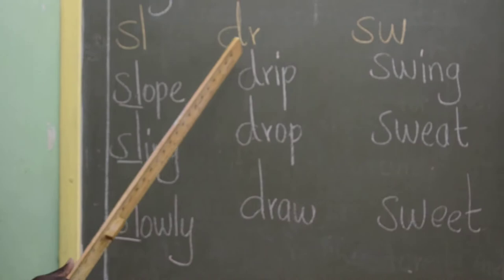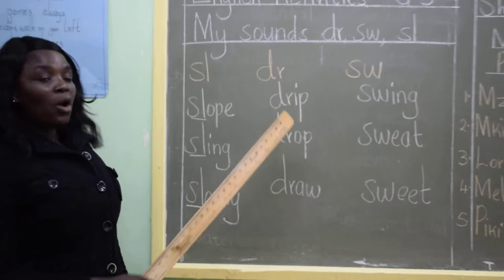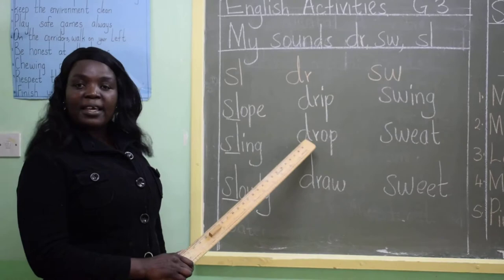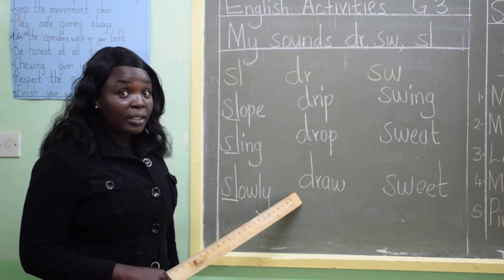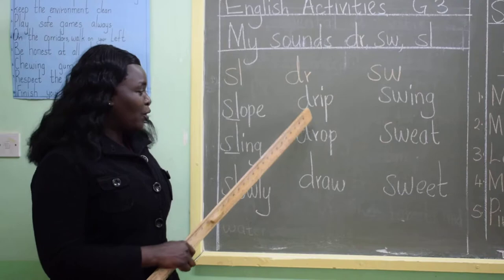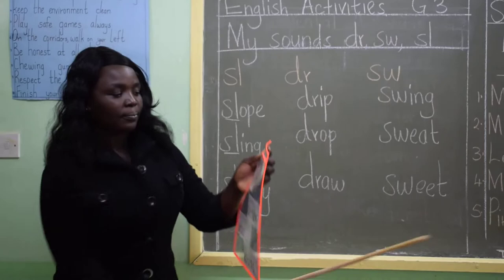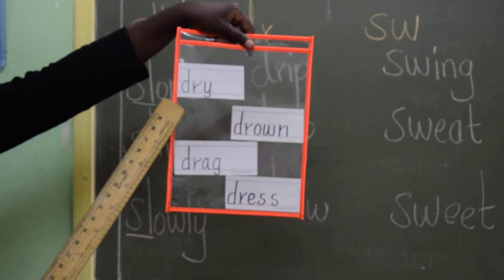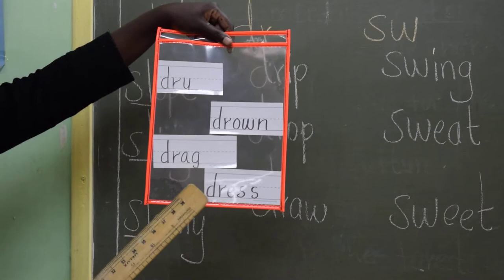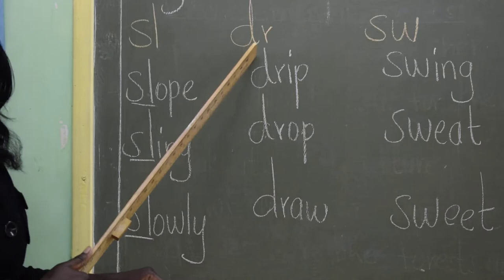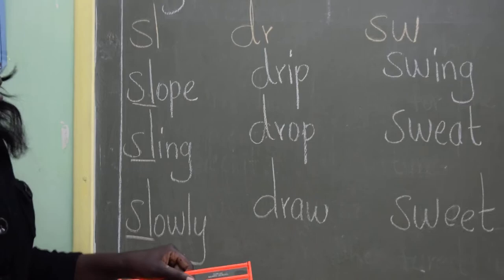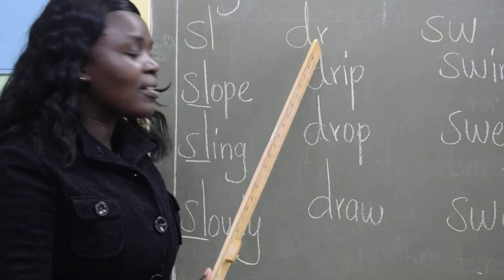Now I want us to go to the second blend, which is DR. The first word is drip, then there is drop. Remember, you have to make your tongue heavy — don't say drip or drop lightly, it is drip, drop. I have more words here: dry, drown, drag, and dress. Find more words that start with this blend, and make a sentence using those words.